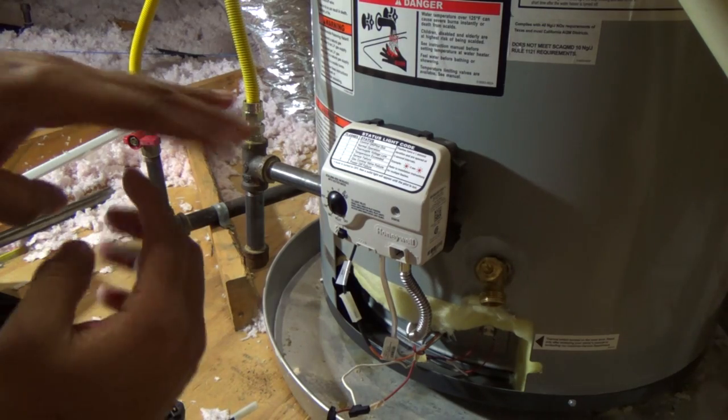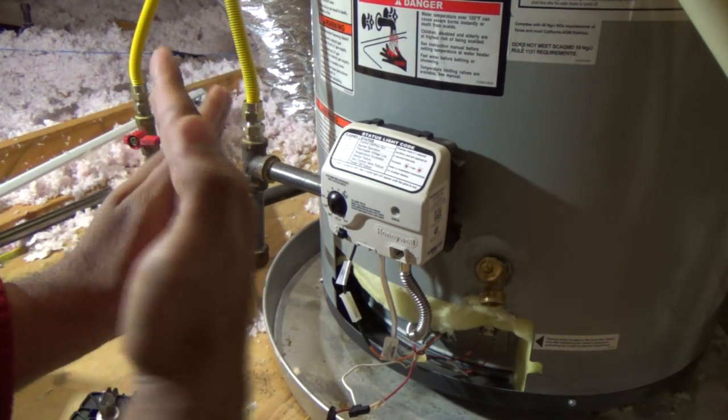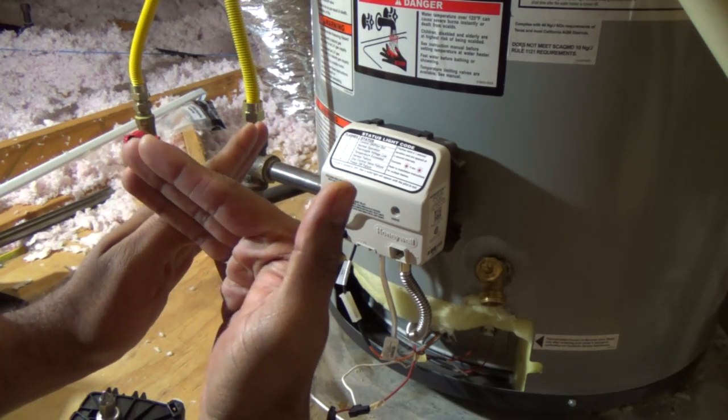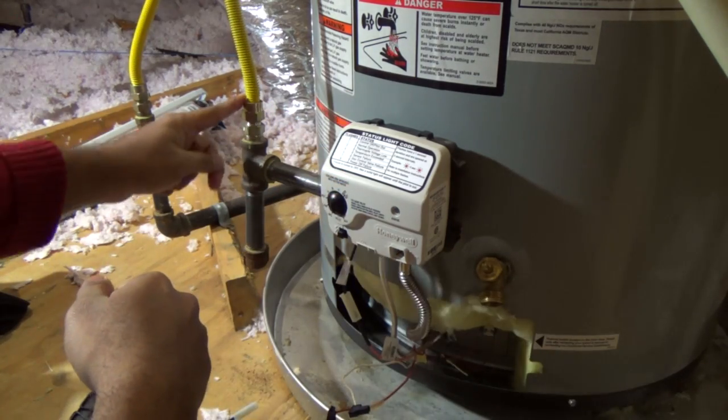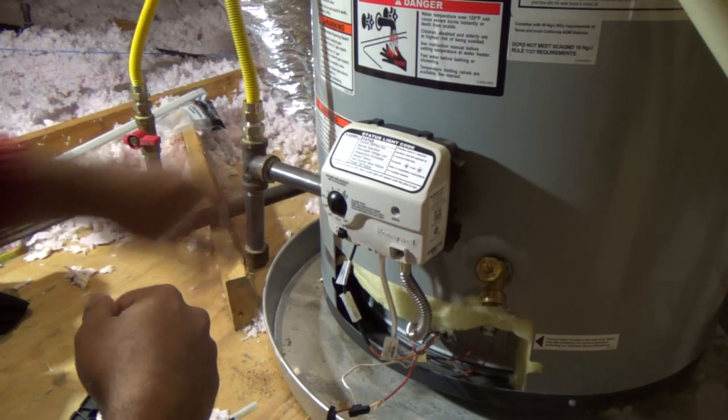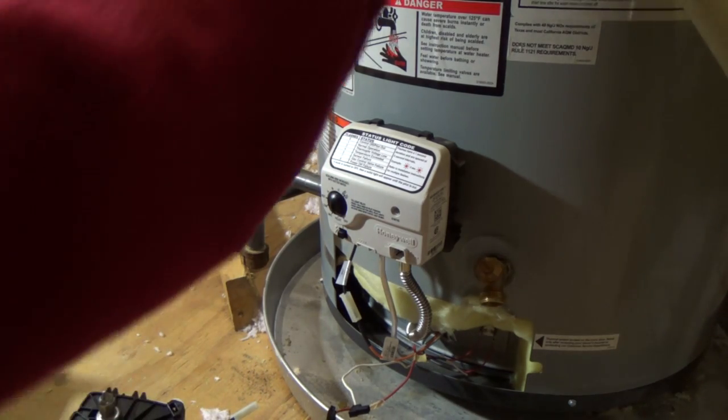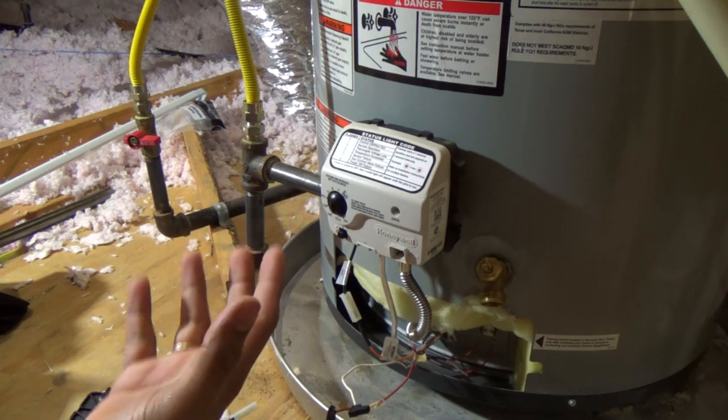When you have a pipe running and you turn the gas valve vertical like a T, that stops the gas from flowing into the gas inlet. The second thing we do is make sure the tank is not hot. Same principle here, turn it vertical.